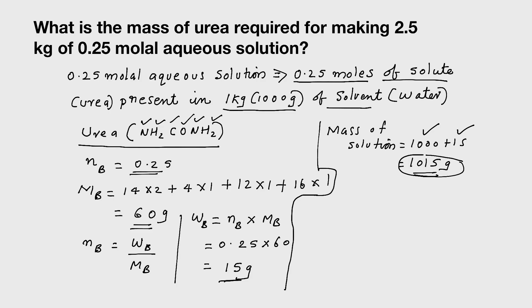Now we can use the unitary method. Mass of urea in 1015 gram of solution - what is that? 1015. So in 1 gram, how much urea will be there? 15 by 1015.